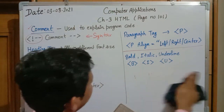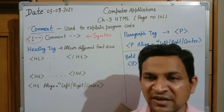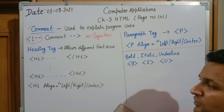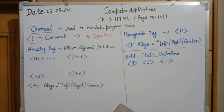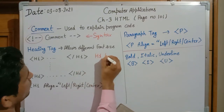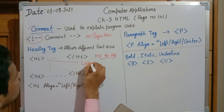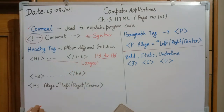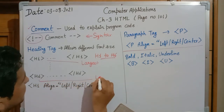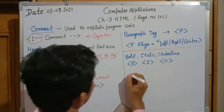The next topic is heading. The heading tag is used to allow different font sizes for headings. When we want to write a heading or make a title for a web page, we use heading tags. In total we have h1 to h6 — six heading levels. The h1 heading provides the largest font size and h6 provides the smallest font size.